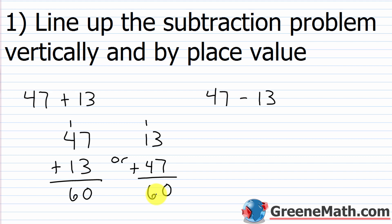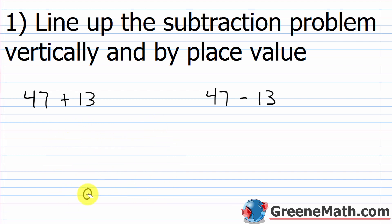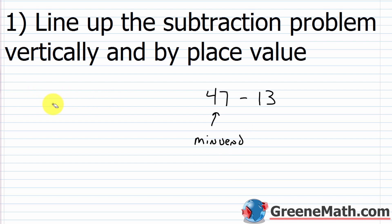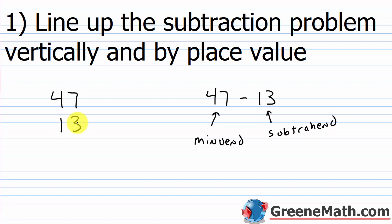Now with subtraction, we don't have the commutative property, so what goes on top and what goes on the bottom is going to matter. You want to take the leftmost number in your subtraction problem — this is called the minuend — and put that on top. Then you want to take your subtrahend, which is 13 in this case — the value that's being taken away — and put that on the bottom. Notice how we're stacking the numbers: they have to be lined up by place value, so all the numbers in the ones place line up, all the values in the tens place line up, and so on. You have to make sure the correct number is on top and the correct number is on the bottom to get the right answer.